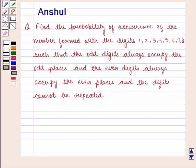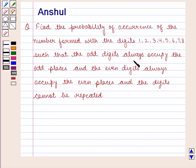Hello and welcome to the session. In this session we are going to discuss the following question: Find the probability of occurrence of the number formed with the digits 1, 2, 3, 4, 5, 6, 7, 8 such that the odd digits always occupy the odd places and the even digits always occupy the even places, and the digits cannot be repeated.